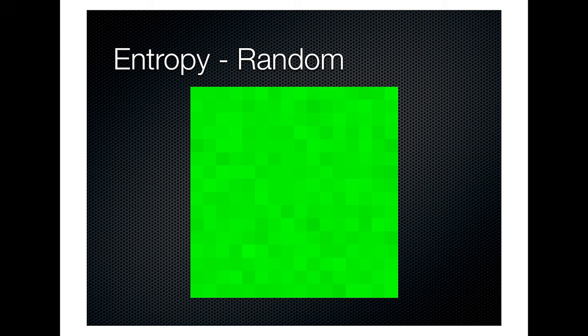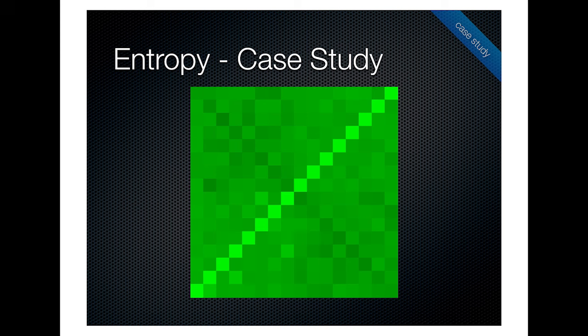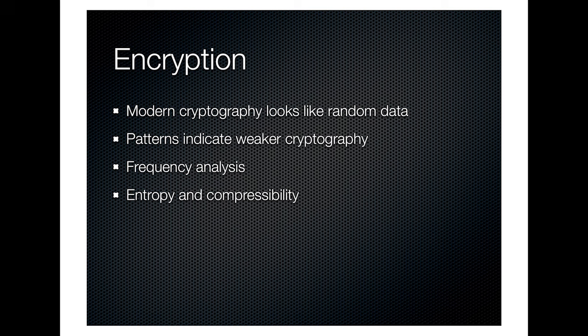If you had AES-encrypted data, you'd have something very similar — it looks almost random. In our case, this is what we found, and clearly we're not working with strong encryption. Modern cryptography will look like random data, and so will compressed data — if you compress a string of five A's, you express it differently and it looks more random. Apply frequency analysis to whatever dataset you're looking at. If it's strong encryption, consider other methods.